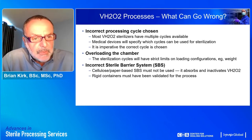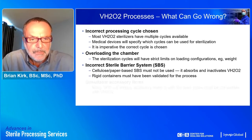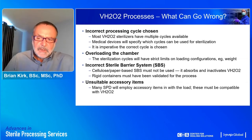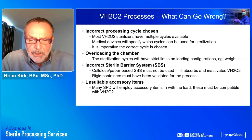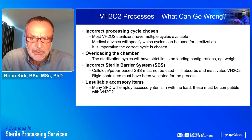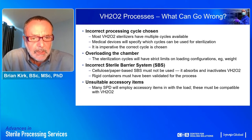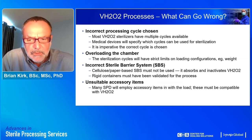Rigid containers can also be used, but they must be validated for use in the hydrogen peroxide process. Many sterile processing departments use accessory items within containers for ease of handling or positioning of instruments, but these should also be validated for use in the hydrogen peroxide process, because some materials like paper can absorb hydrogen peroxide and reduce its effective concentration available for killing microorganisms.